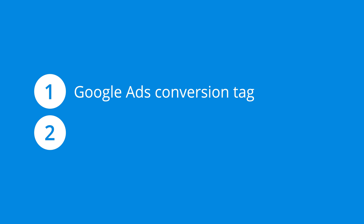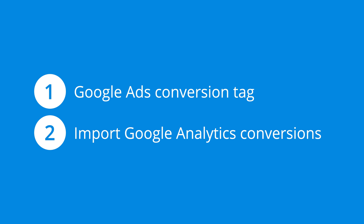There are two options for tracking website conversions in Google Ads. We can create a dedicated Google Ads conversion tag, or we can import conversions from Google Analytics. If you need to get up and running quickly and you're already reporting conversions in Google Analytics, then importing conversions is a good option — it means you won't need to add extra code to your website. However, for more accurate reporting, I recommend using the dedicated Google Ads conversion tag. It will require more time to set up, but it will provide more accurate results.